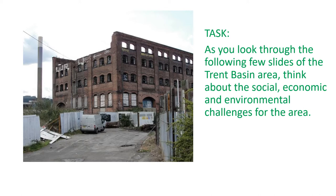You might even recognise this picture — this is one of those old industrial buildings, which is actually a listed building and part of our history. This is the incinerator here — that thing that looks a little bit like a cigarette — which is burning a lot of Nottingham's waste. Over the next few slides, I'd like you to look at the images and write down the social, economic, and environmental challenges for the area. Pause this slide quickly, make those three columns, and then you'll be ready to move on.